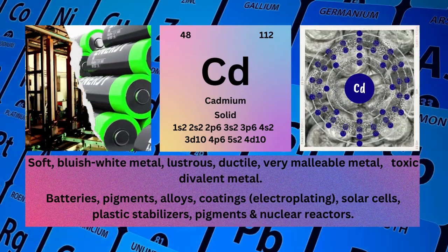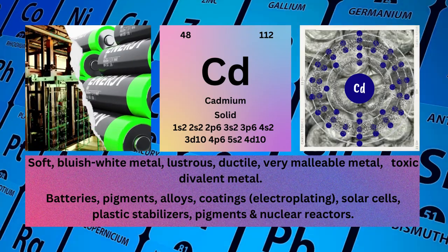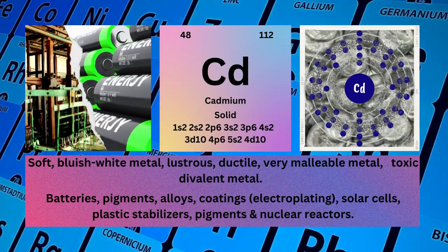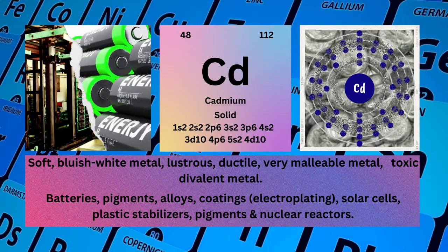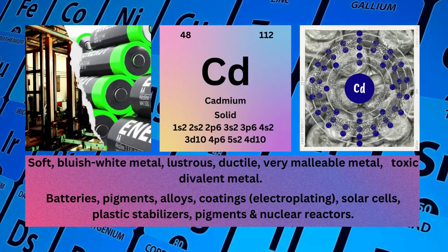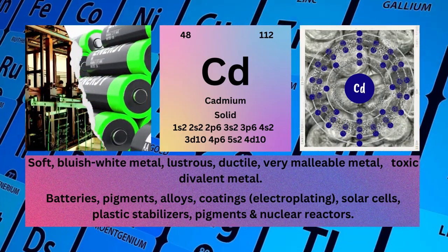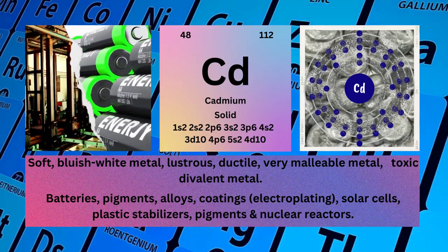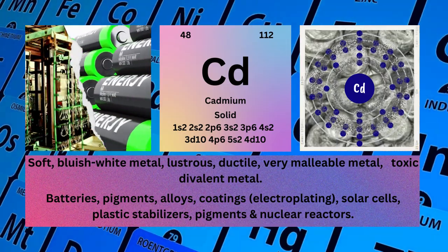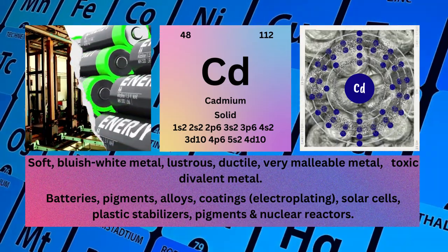Physical properties: soft, bluish-white metal, lustrous, ductile, very malleable, toxic divalent metal. Cadmium is used for batteries, pigments, alloys, coatings, electroplating, solar cells, plastic stabilizers, pigments, and nuclear reactors.